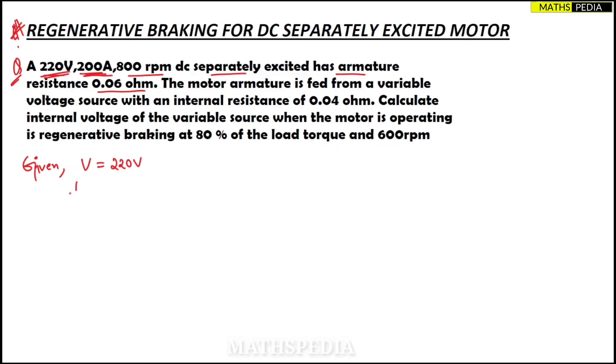Next, 200 amps is Ia1, so Ia1 = 200 amps. Next, 800 rpm, so N1 = 800 rpm.